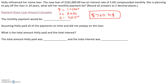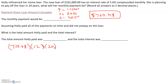For the second part, assuming Holly paid all of the payments on time and did not prepay the loan, what is the total amount Holly paid and what is the total interest? To get the total amount that Holly paid, she makes a payment of $700.48 per month. There are 12 months in a year, so each year she makes 12 payments, and she does this for 20 years.